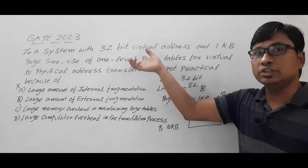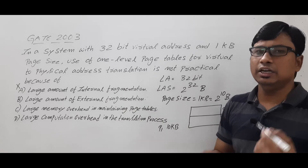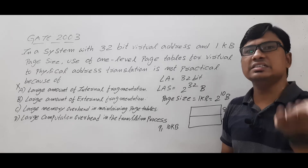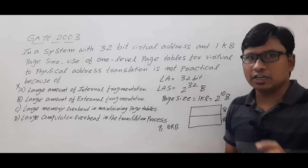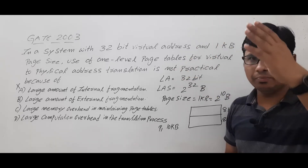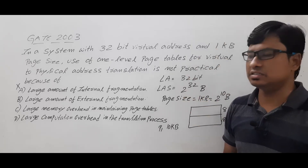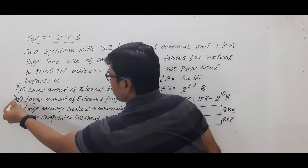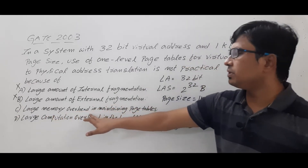In paging, and particularly in virtual addressing, we will not face external fragmentation. In virtual memory, if the process size is greater than main memory, we use on-demand paging — whenever a page is required, only then it is loaded into main memory. Not all pages need to be in main memory at once to execute the process. So there is no chance of external fragmentation, and option B is also wrong.